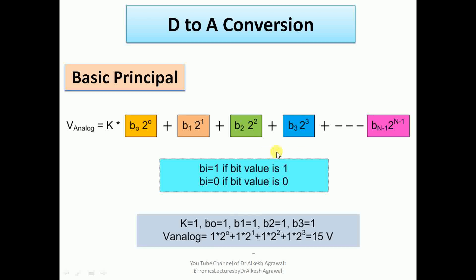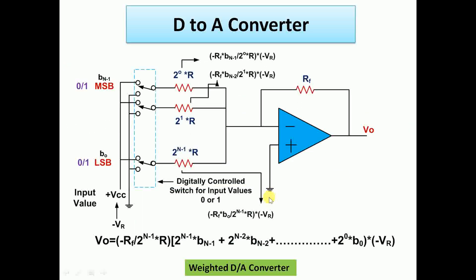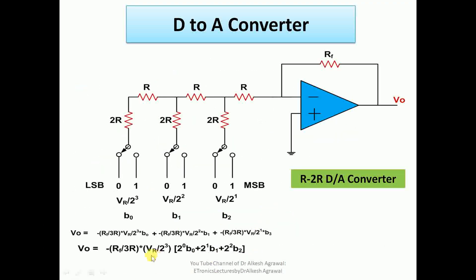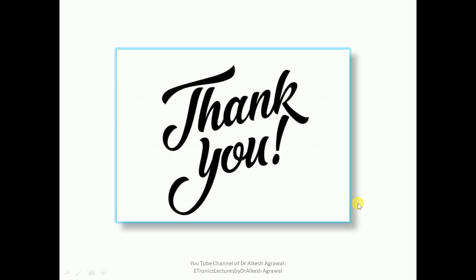Comparing both converters to the first slide, both the weighted DAC and the R2R ladder DAC use the same basic conversion principle: k × (b0×2⁰ + b1×2¹ + b2×2² + …). The basic equation holds in both cases, with k acting as a scaling constant determined by the resistor network and reference voltage. This is how digital input is converted into analog values. Thank you, and I hope you have learned how to convert digital input into an analog signal.